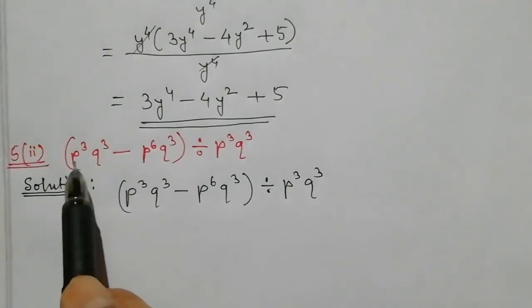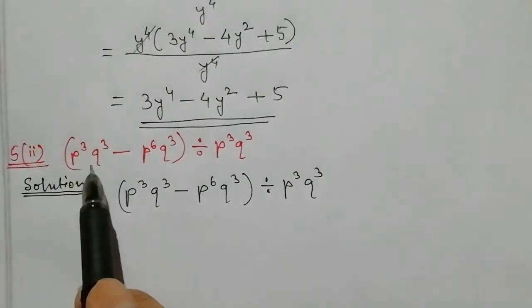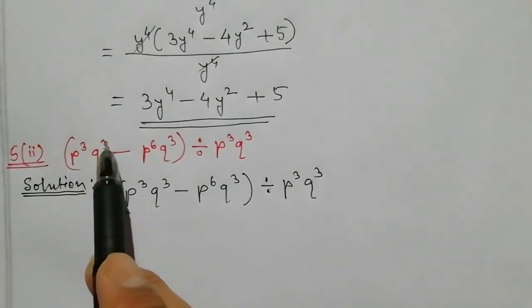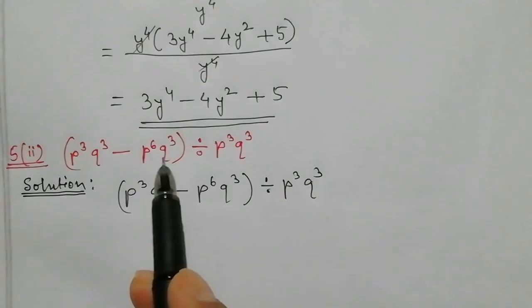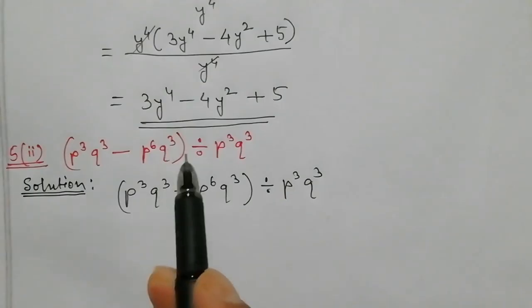Question 5 to 2 is: p cubed into q cubed, minus p to the power 6 into q cubed, and I can divide.